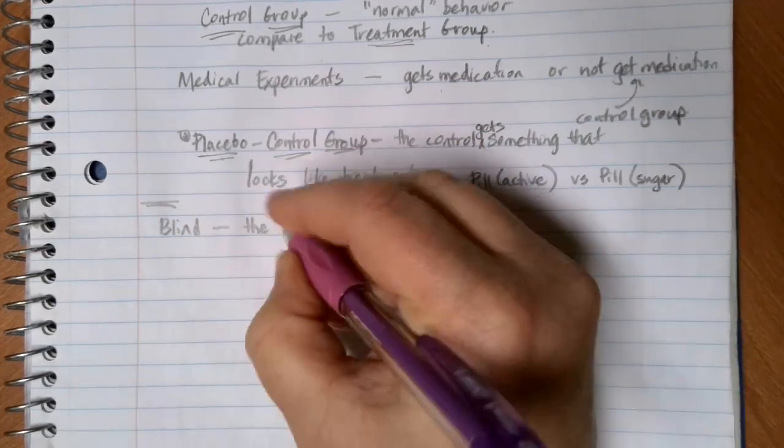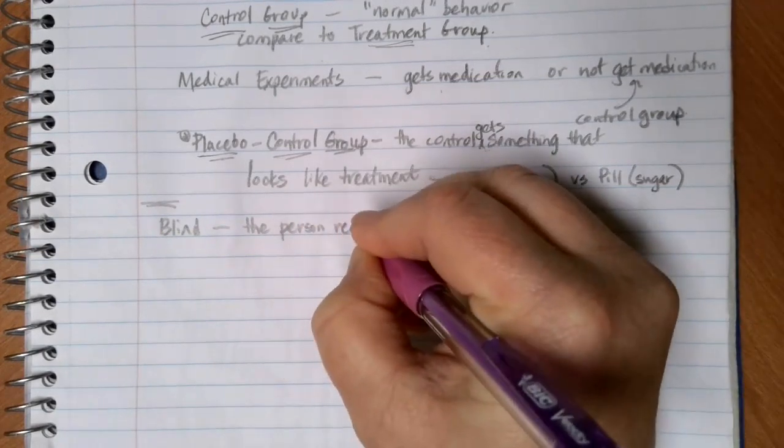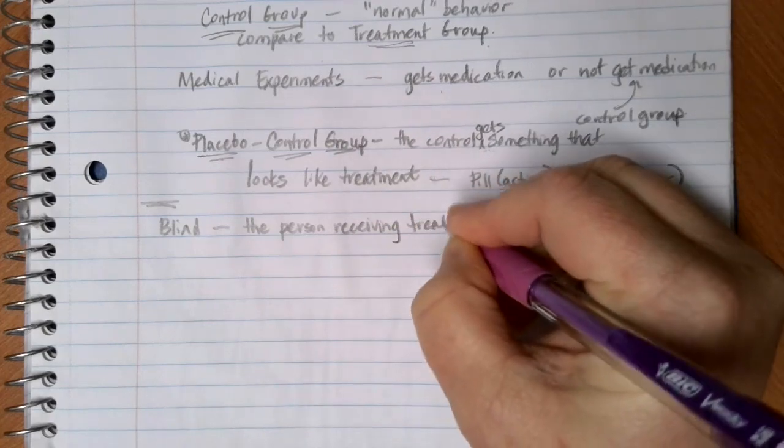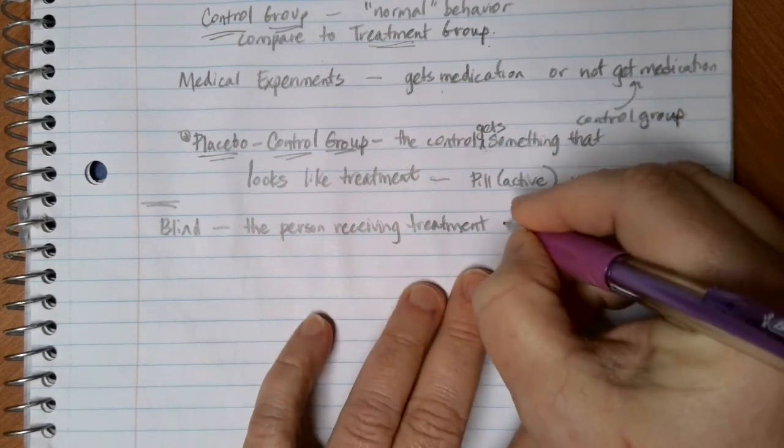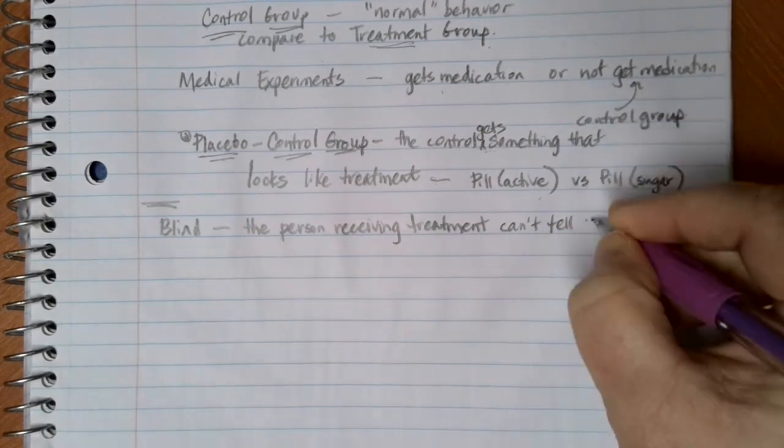In a blind experiment, the person receiving the treatment or the group, it doesn't have to be a person, but whoever is receiving the treatment can't tell if they're in the treatment group or not.